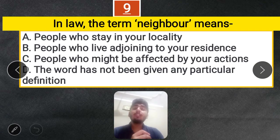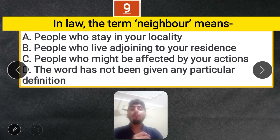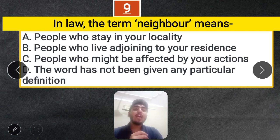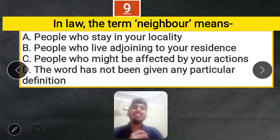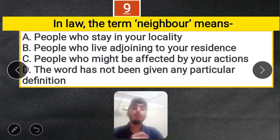Question 9: In law, the term 'neighbor' means — people who stay in your locality, people who live adjoining to your residence, people who might be affected by your actions, or the word has not been given any particular definition. The correct answer is C — in law, 'neighbor' means people who might be affected by your actions.